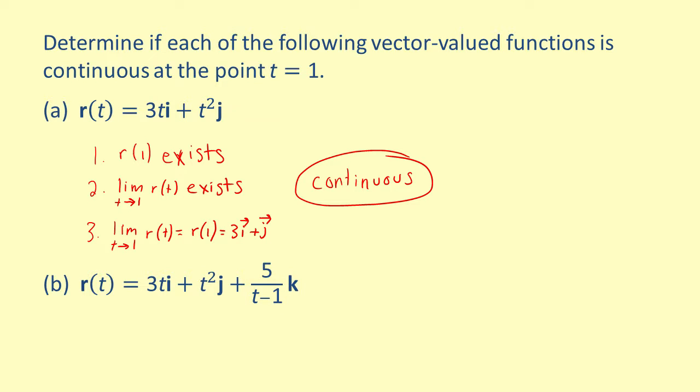Since the rational function h of x equals 5 divided by the quantity t minus 1 is undefined when t equals 1, r of 1 does not exist. We do not need to check the other conditions, because if any one of the conditions is not satisfied, the function is not continuous at the given point. Therefore, we conclude that the second function is not continuous at t equals 1.